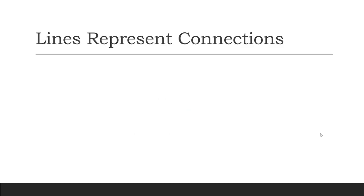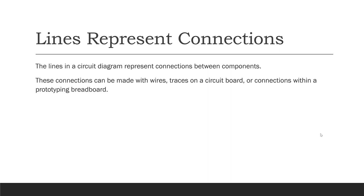In a circuit diagram, lines represent connections. Connections can be made in many different ways. They can be made with wires, or with traces on a circuit board, or even connections in a prototyping breadboard. But the lines on the circuit diagram show which pieces are connected to which other pieces.